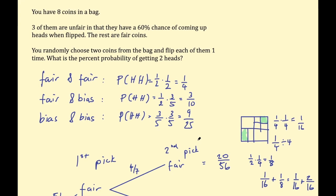You might recognize this problem — it's similar to one in a Khan Academy video, just a slight variation. The original problem had you pick one coin and flip it two times; this version says pick two coins and flip each one time. That small change really complicates the question and shows how quickly probability can become much more challenging. I hope you found the explanation logical and agree with the final answer — let me know in the comments if not. Thanks for watching!